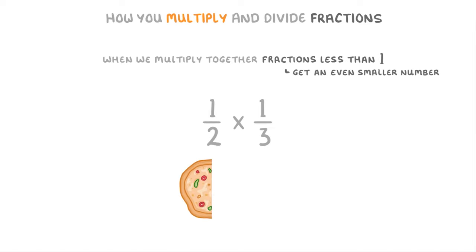For example, if we start with half a pizza, then by multiplying it by 1 third, we're effectively selecting 1 third of that half pizza. So now we only have 1 sixth of the whole pizza.